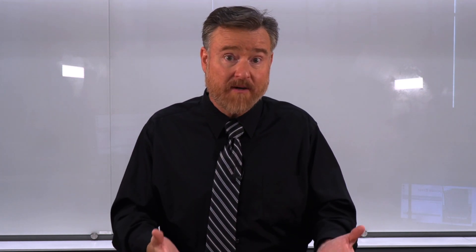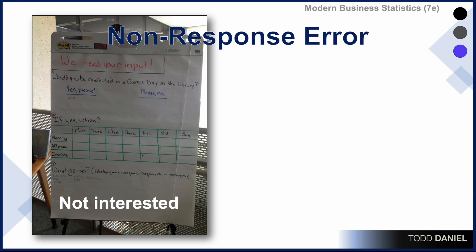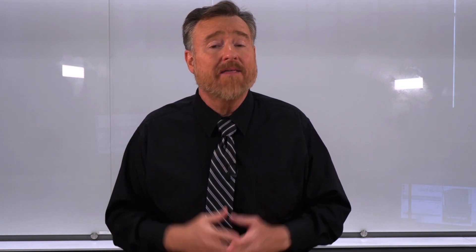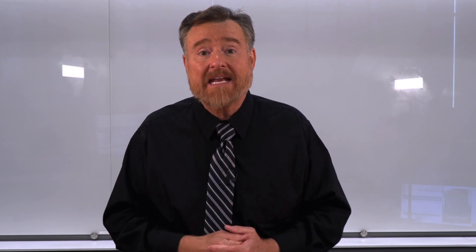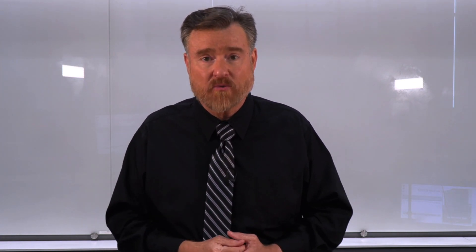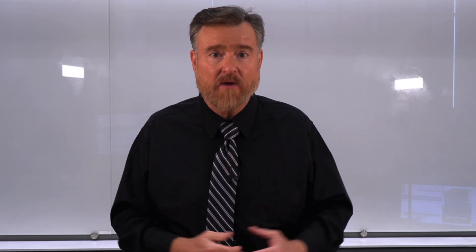Let me show you a very clear example of missing data being incredibly important. At our university library there was a big piece of paper asking, would you be interested in a games day at the library? The two options were yes please and please no. What you'll note is there are a certain number of people who answered yes and no one answered no — because as people walk past, if they're not interested in a game day, they don't stop to tell you they're not interested. You don't know the total number of people who are not interested — you do not have a denominator for this ratio.